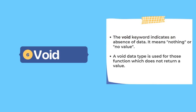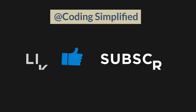The last primary data type is void. Void indicates the absence of data and is usually used with functions, not with variables. When we cover the functions topic, it will be easier to understand what void means. Basically, when a function does not return any value, we declare it of void type.